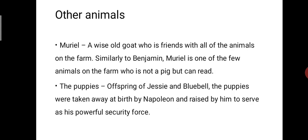Next, other animals: Muriel, a wise old goat who is friends with all of the animals on the farm. Similarly to Benjamin, Muriel is one of the few animals on the farm who is not a pig but can read. The puppies — offspring of Jessie and Bluebell — were taken away at birth by Napoleon and raised by him to serve as his powerful security force.